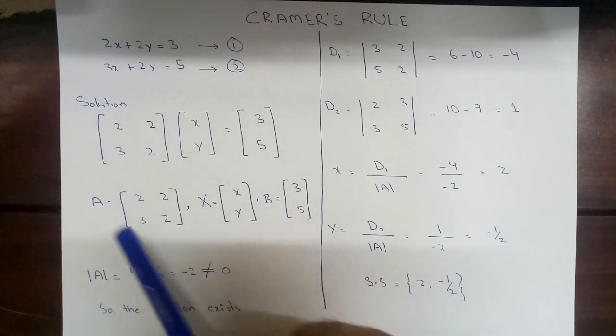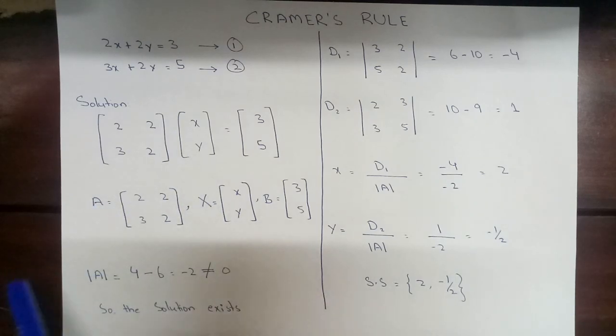Now we will name all these three matrices. A is equal to 2, 2, 3, 2, and X is equal to x and y, B is equal to 3 and 5.